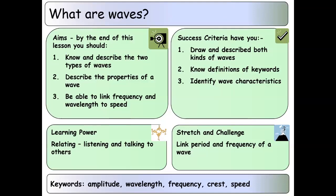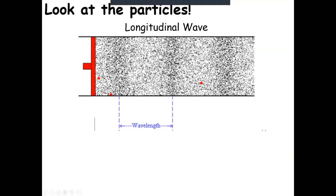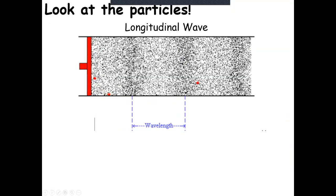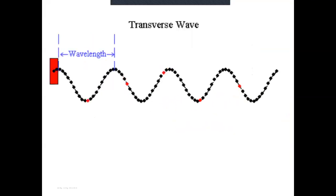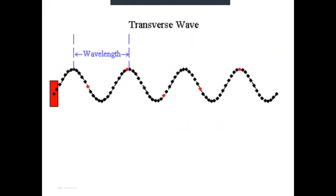You'll know you've succeeded if you know the definitions of our keywords: amplitude, wavelength, frequency, crest, and speed, and you can identify any of those characteristics. To really challenge yourself, you should be able to link the period of a wave to the frequency. So first up, there are two different kinds of waves: a longitudinal wave and a transverse wave.